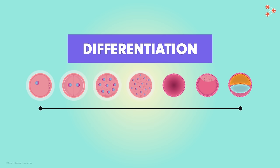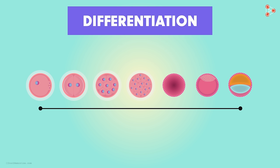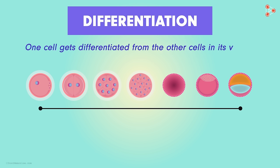As the name suggests, it is the process in which one cell gets differentiated from the other cells in its vicinity. As a result, we get a whole new variety of cells from these differentiated ones after successive divisions.